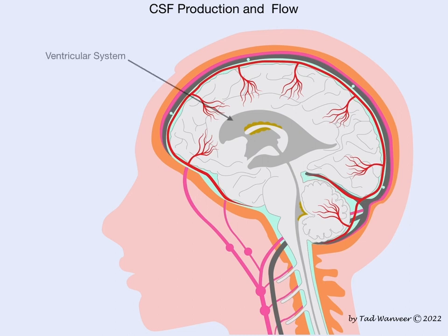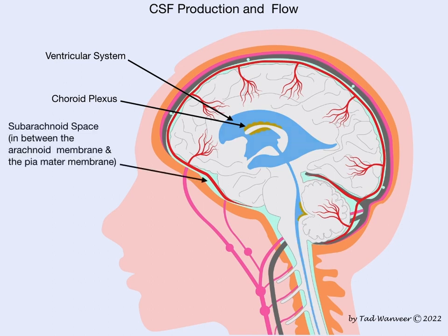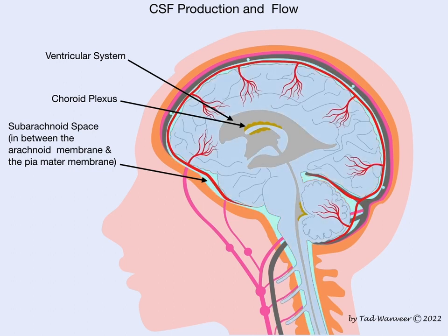Cerebral spinal fluid is produced in four interconnected cavities deep within the brain, known as the ventricular system. Within each cavity is a choroid plexus, which is comprised of capillaries encased within ependymal cells. Cerebral spinal fluid is produced in the ventricular system and flows in the subarachnoid space, which is the space in between two of the three membrane layers encasing the brain and spinal cord.